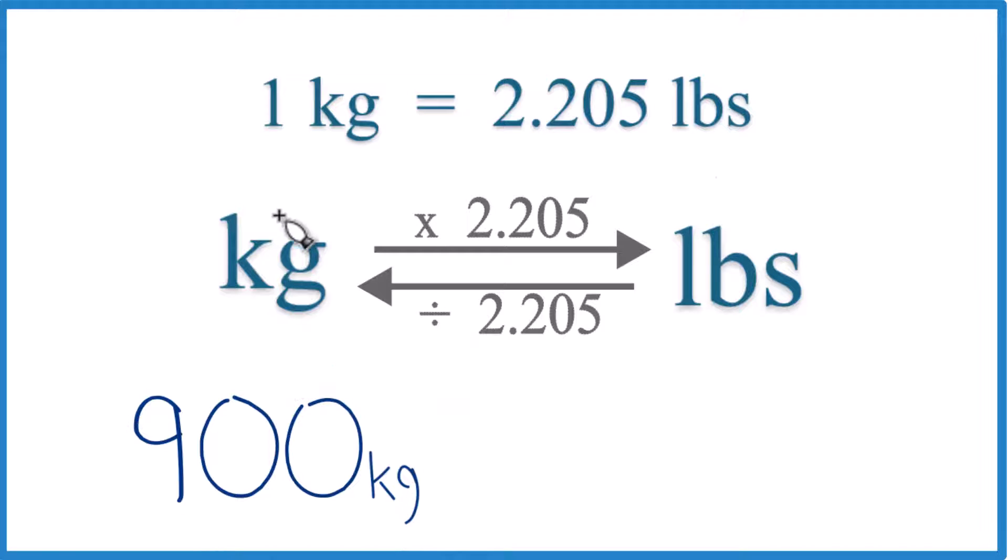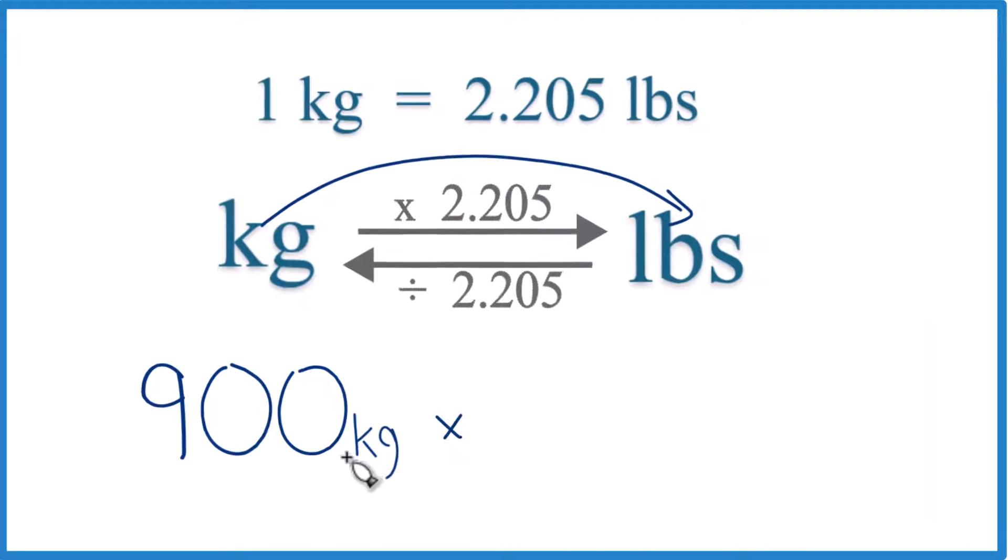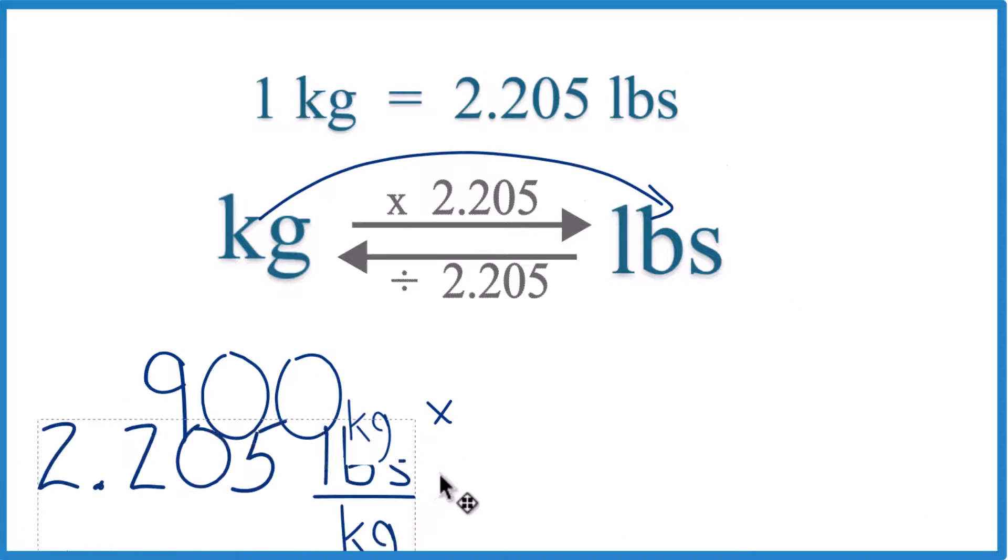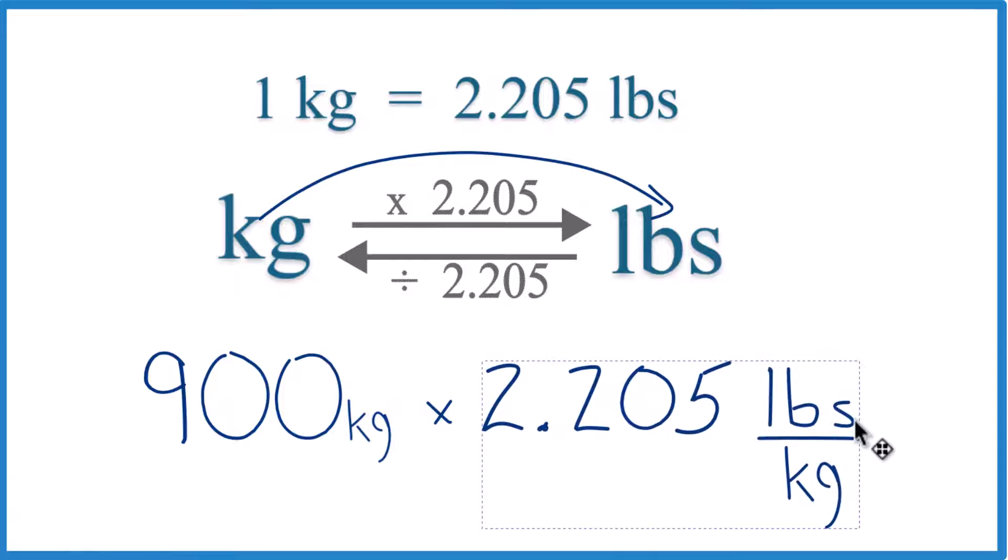Since we have 900 kilograms, we're going kilograms to pounds, and we multiply by that 2.205 number, our conversion factor. You can see it's 2.205 pounds per kilogram. That comes from our conversion factor.